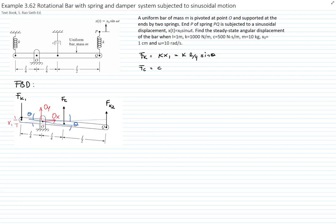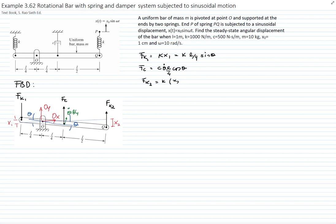We assume that the springs and the damper remain in the vertical position. The velocity of that point is perpendicular to the bar, which is theta-dot times L/4, and we decompose it in the direction of the damper by multiplying by cosine of theta. The force of the other spring equals K times the relative displacement between the two ends of the spring. So x2 equals the bar displacement (3L/4) sine of theta minus the sinusoidal displacement applied to the other end of the spring.